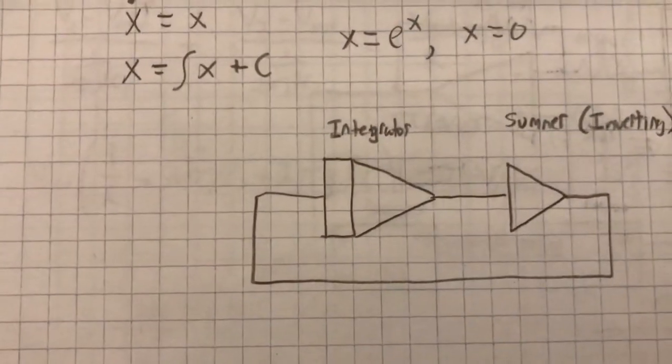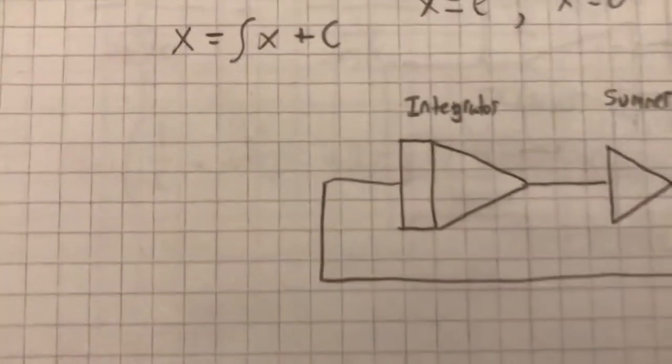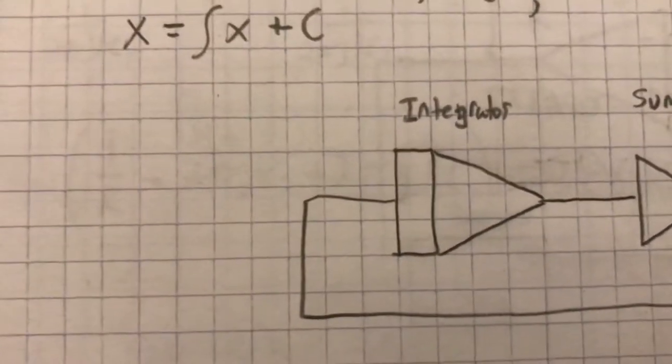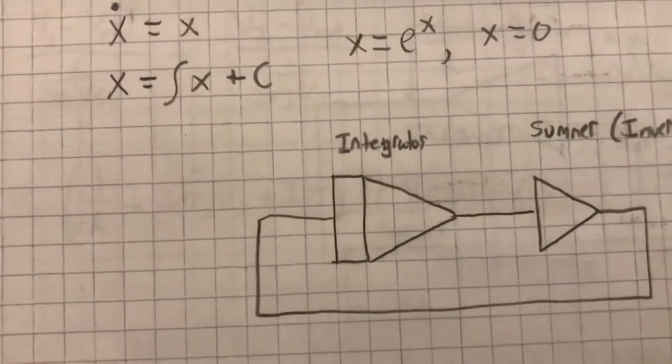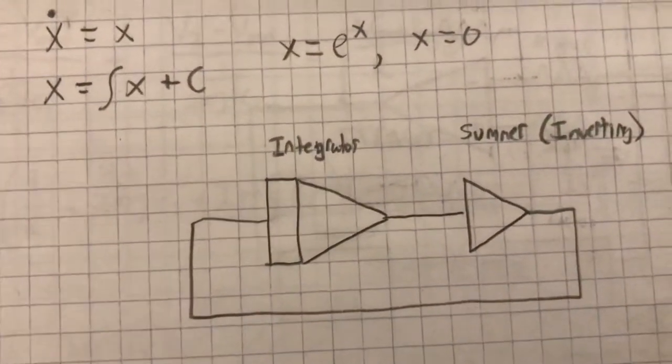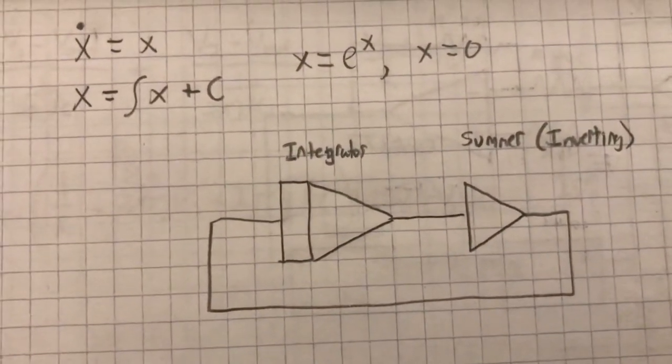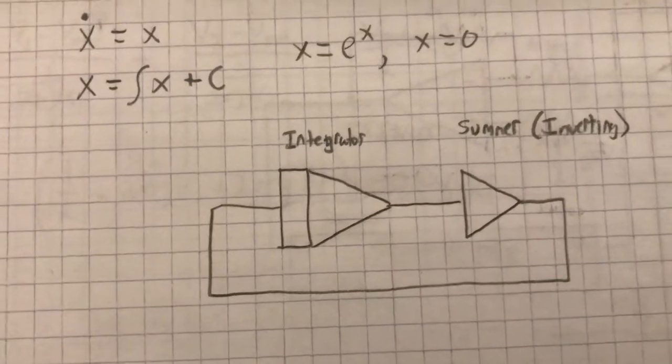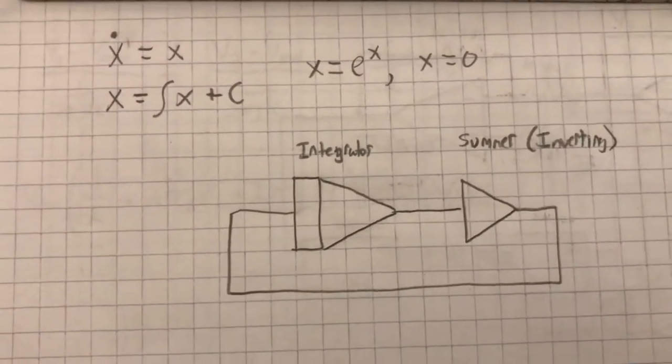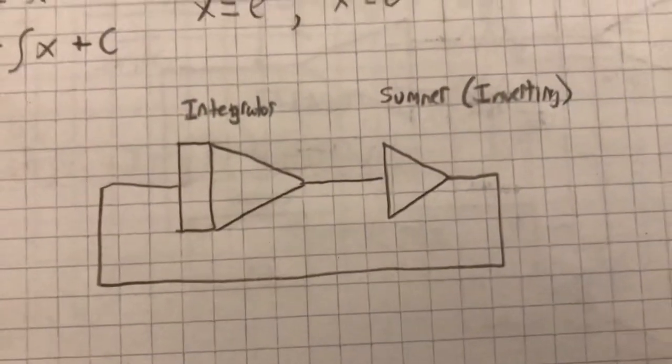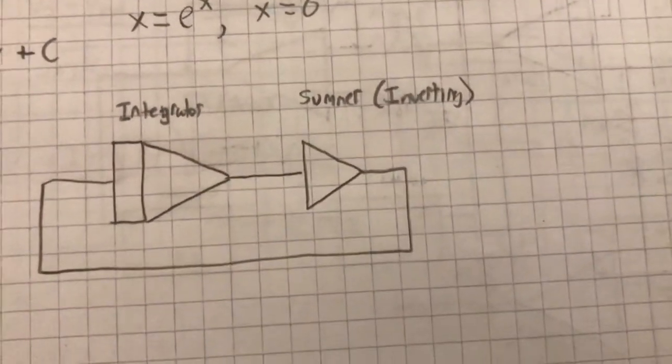Basically the integrator is integrating. We'll just assume that the input to the integrator is equal to the function X. In that case, the output will be equal to the integral of X, the negative integral of X, because it inverts.